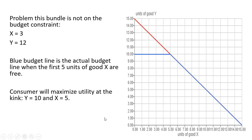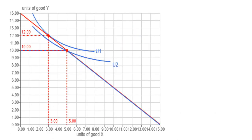Let's show this with indifference curves. We found that we can get an indifference curve tangent to the straight-line budget line extending from 15 on the vertical axis to 15 on the horizontal axis, where Y is 12 and X equals 3. However, the consumer cannot afford this point — the consumer would need $12 to buy 12 units of good Y at a dollar apiece, but the consumer only has $10. So the best the consumer can do is right here at the kink. I hope you found this video helpful.